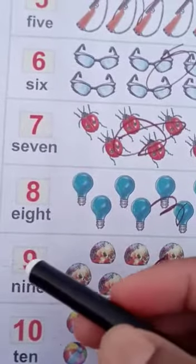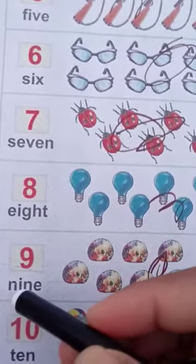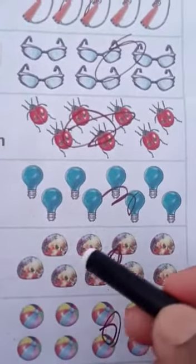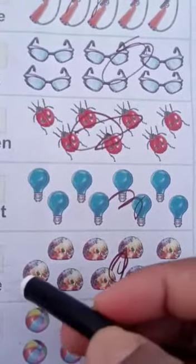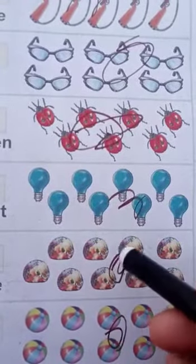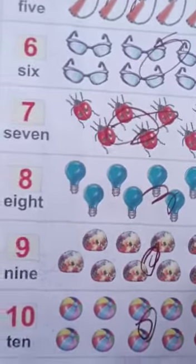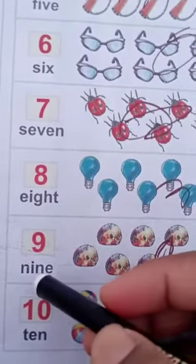Next, nine. N-I-N-E, nine. Here are nine objects: one, two, three, four, five, six, seven, eight, nine. Here are nine objects.